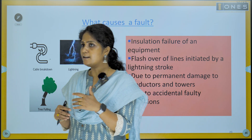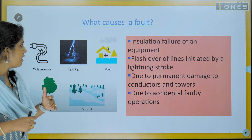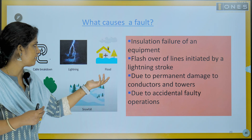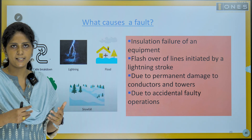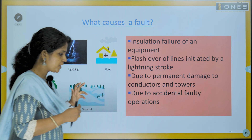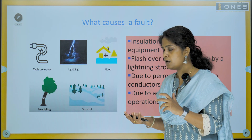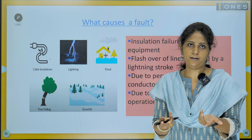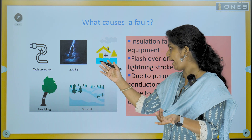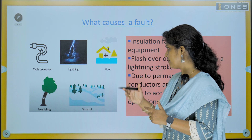Now, what causes this failure? First, insulation failure of equipment — this is a cable breakdown. This is a failure that affects the system. Natural reasons include lightning strokes — a flashover of lines initiated by lightning strokes.